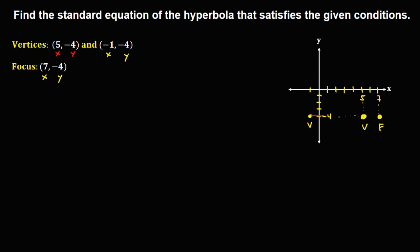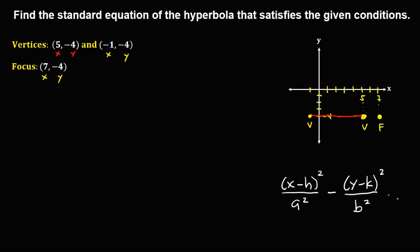Observe that in the graph, the position of the vertices is in horizontal form. Since the vertices are in horizontal form, this hyperbola is in horizontal position. The formula for a horizontal hyperbola is: (x − h)² / a² − (y − k)² / b² = 1.